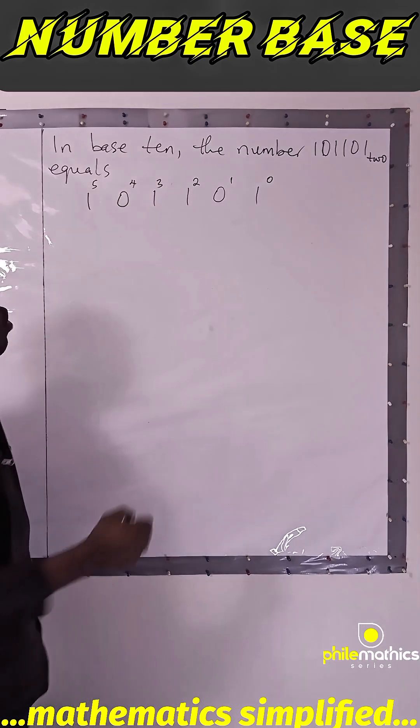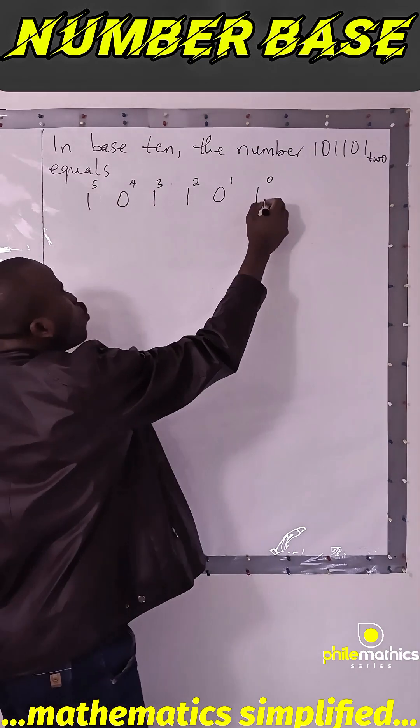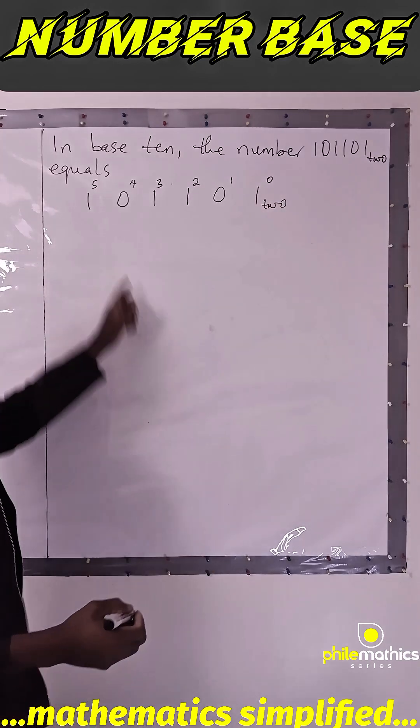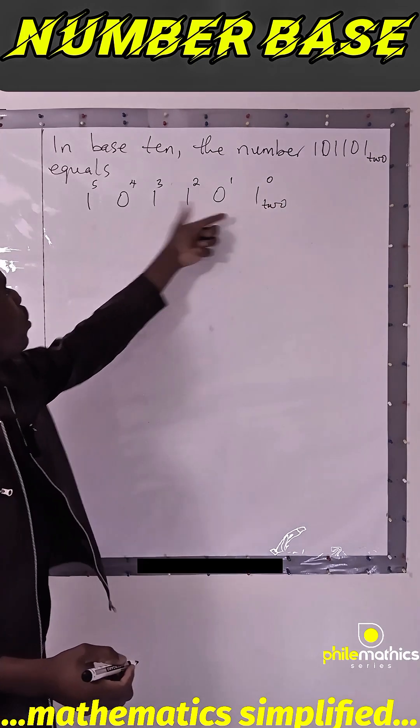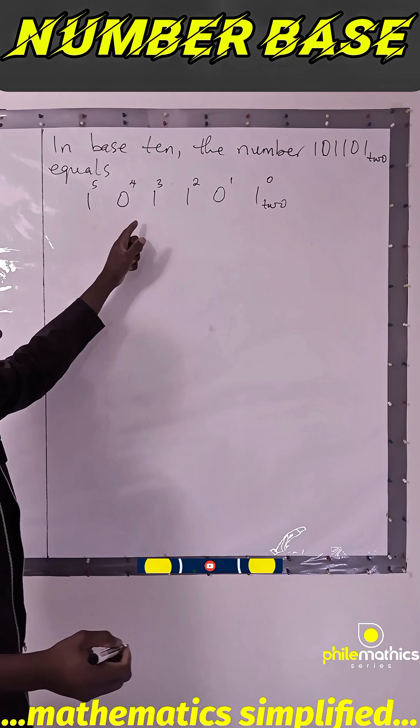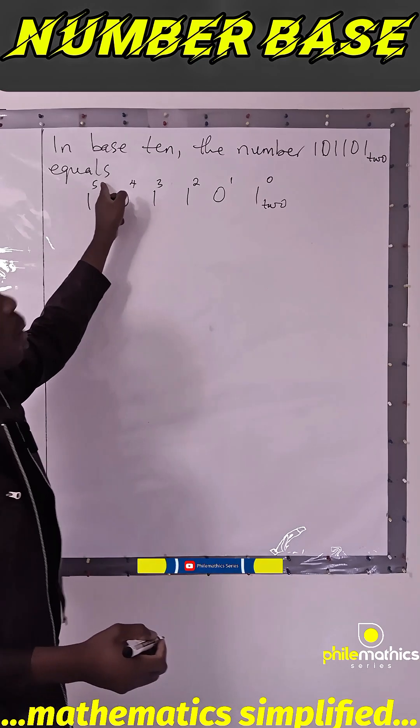For us to convert this number, which is in base 2, to base 10, we will multiply each of these digits with base 2 to each of their powers.